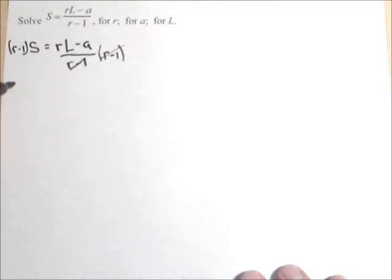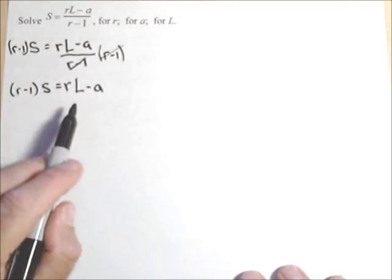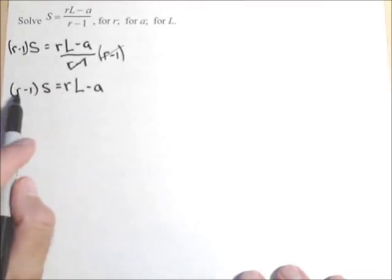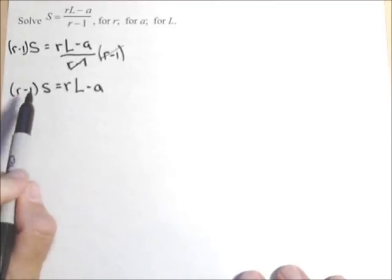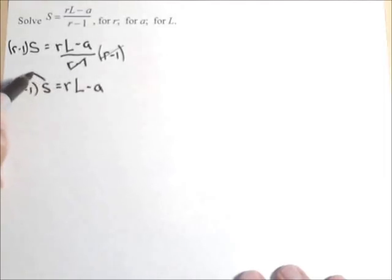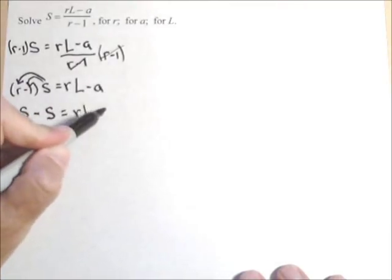Now looking at what we have left, R minus one times S equals RL minus A, we have two R's in here and we have to solve for R. So we need to get both terms with R in it on the same side. Now in order to move things around, we do need to get rid of these parentheses. So what we're gonna need to do next is distribute this S. First we'll get R times S and then S times one is just S, but it's negative, so it's a minus S equals RL minus A.